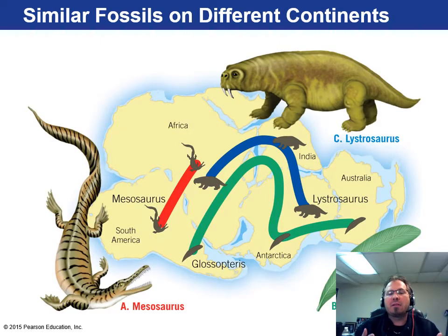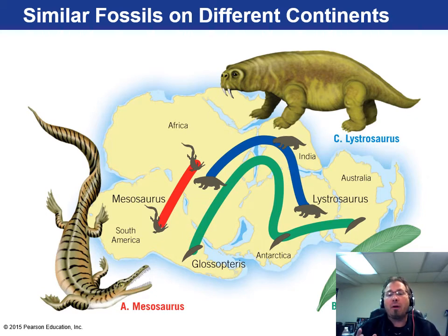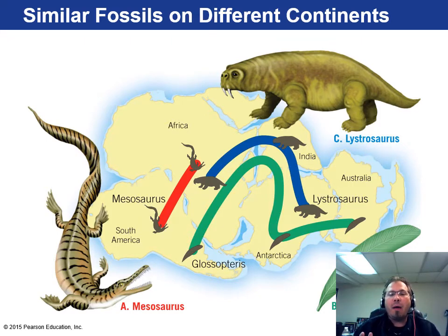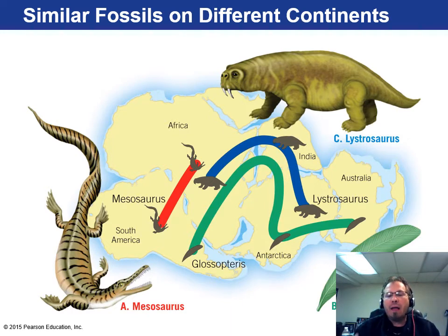Here are three examples. The Mesosaurus was found on both Africa and South America. You have Glossopteris, a type of plant found on all three continents including Australia. And then this Lystrosaurus — it looks like an ancient walrus — was also found on several continents separated by entire oceans. When you're finding things in the same rock type and climate even though they're separated by entire oceans, something's got to give. That's where he proposed his one big massive supercontinent, Pangaea.